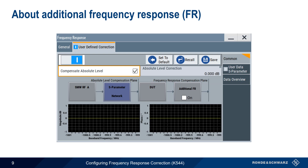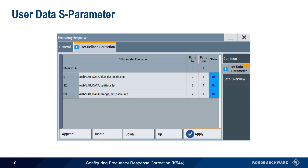S parameter data is, by far, the most common way of providing frequency response correction data, both on signal generators and on spectrum analyzers. There are, however, other data formats that can be used — for example, when S2P data is not available — and these other formats are collectively referred to as additional frequency response. We won't be discussing these in this presentation, so if you're interested in learning more about them, please see the user documentation. S parameter data is normally used for frequency response correction, and this is configured under the user data S parameter tab.